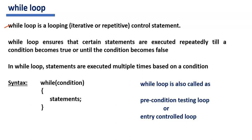Second point: a while loop ensures that certain statements are executed repeatedly till a given condition becomes true, or until the given condition becomes false. That means, a while loop executes statements repeatedly until the given condition becomes false. Statements are executed multiple times based on the given condition.